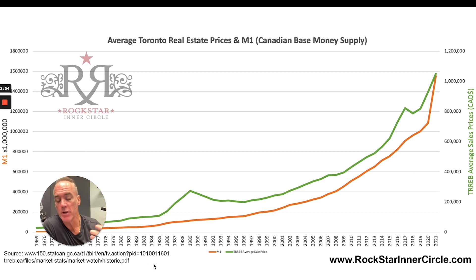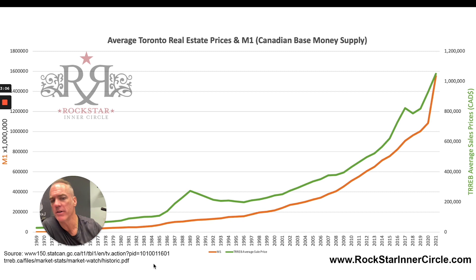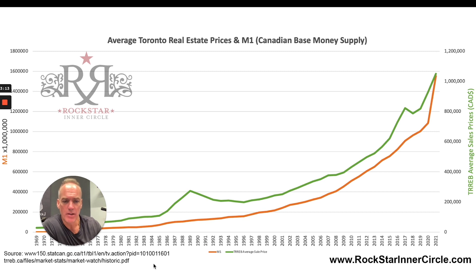We pulled this from Stats Canada — there's the URL if you want to look at this yourself. You can also get the definitions for M1 from Stats Canada, though they make the definitions as confusing as possible. But that's our base money. It makes me think: as more and more currency is created, it's not really the housing prices going up — it's really just the way we price real estate. The value of the dollars is going down.